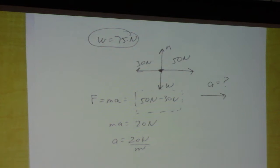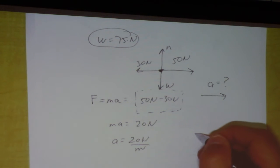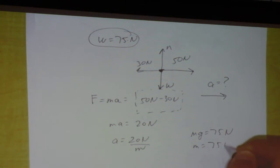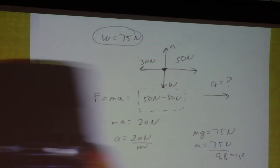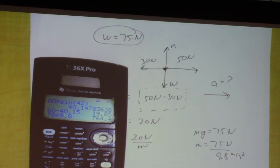We can figure out the mass though. M times G is 75 Newtons. So M equals 75 Newtons divided by 9.8, something bigger than 7.5, let's see, 7.65.